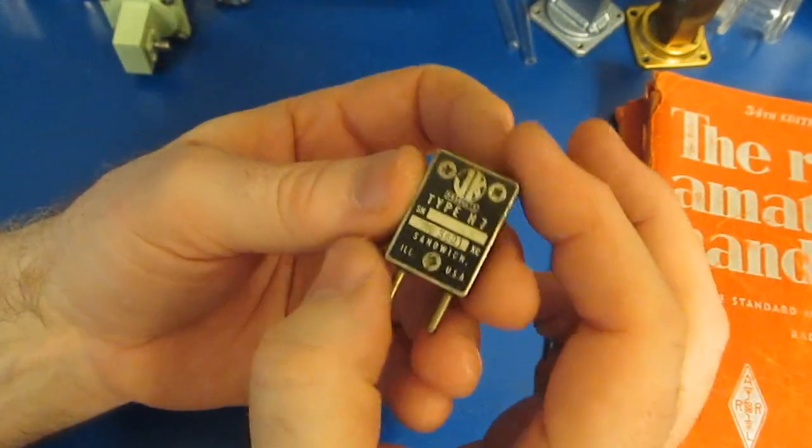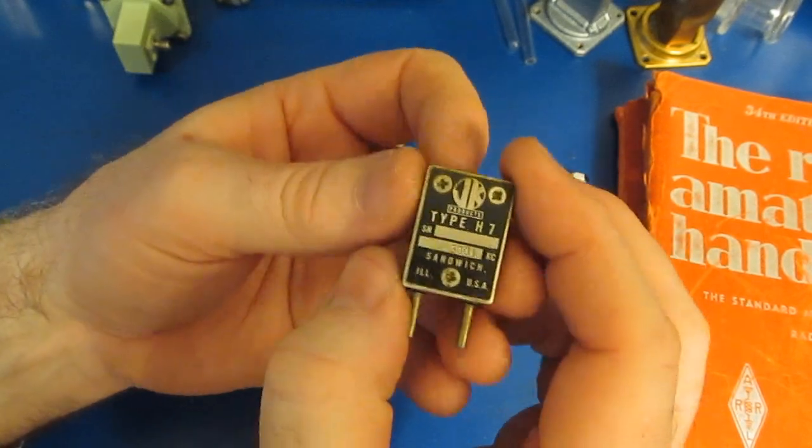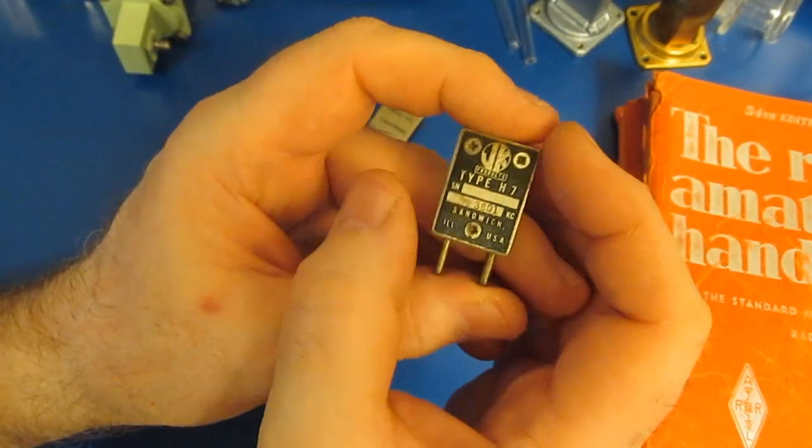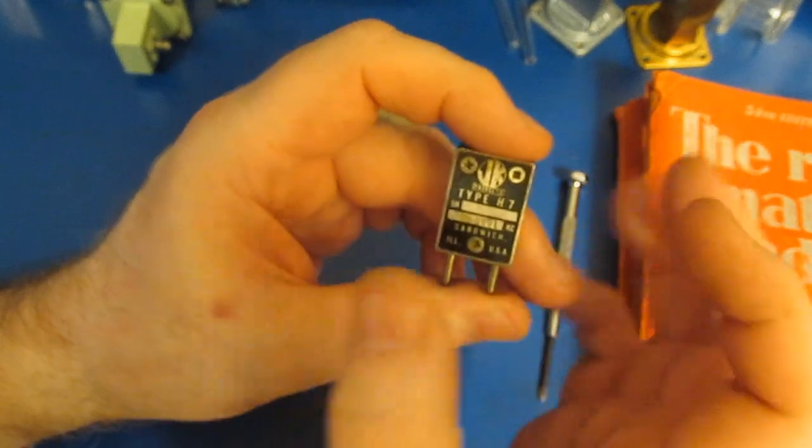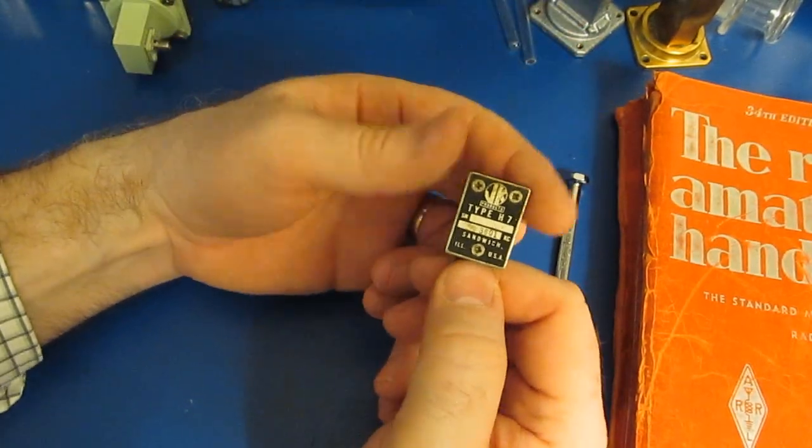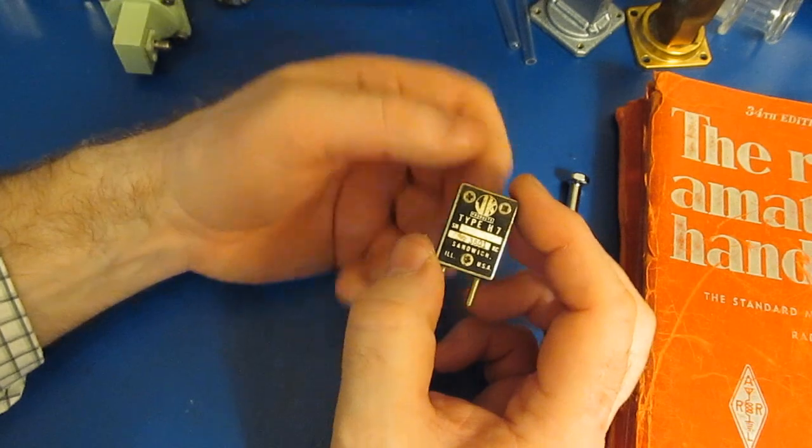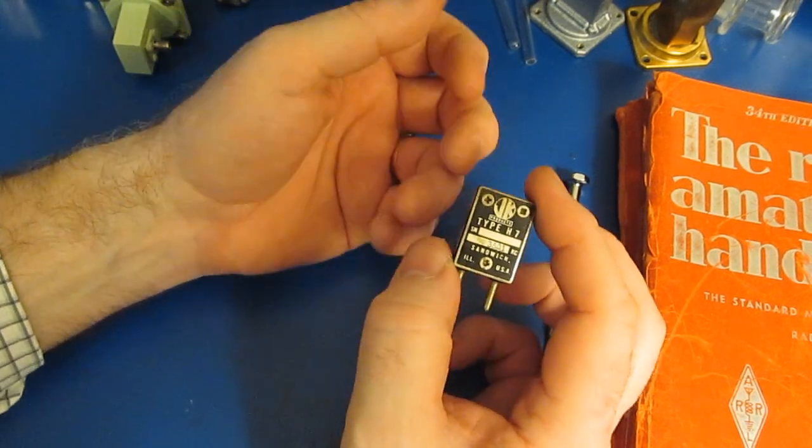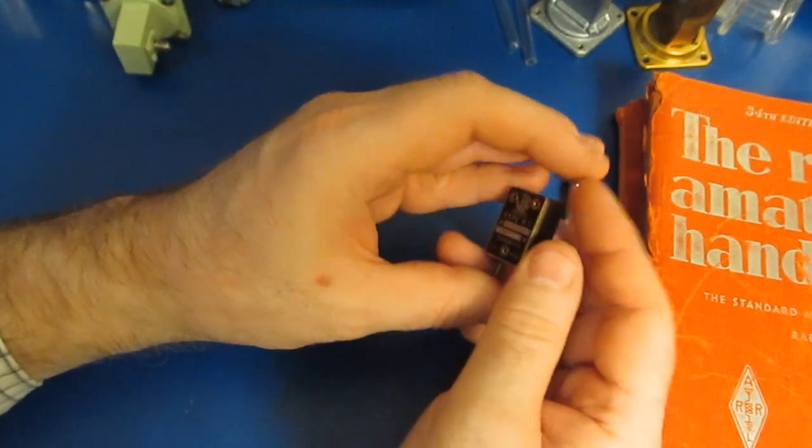So besides using these for your crystal oscillator another common usage is for audio. A lot of you are familiar with the piezo buzzer. Basically you're driving that with a high voltage AC sine wave and you run the frequency right at the resonant point of that beeper. And those can be quite loud. They're quite efficient.